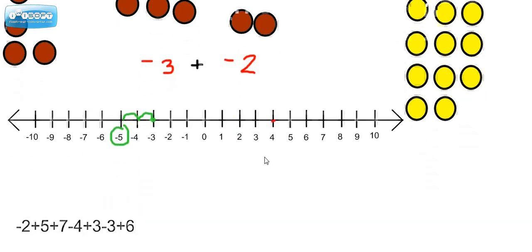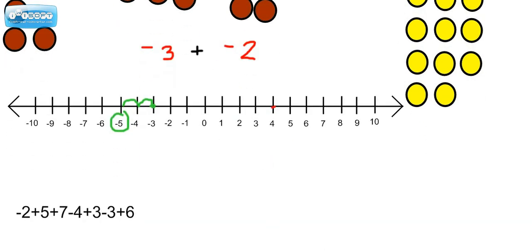Now another thing that, since we just have a few seconds left here to take a look at something that's a little more complex, you can combine all your negative numbers in a problem like this, like we have a negative 2, a negative 4, a negative 3, and ask yourself how many red chips would that be, and then take all the positive numbers, positive 5, positive 7, positive 3, positive 6,